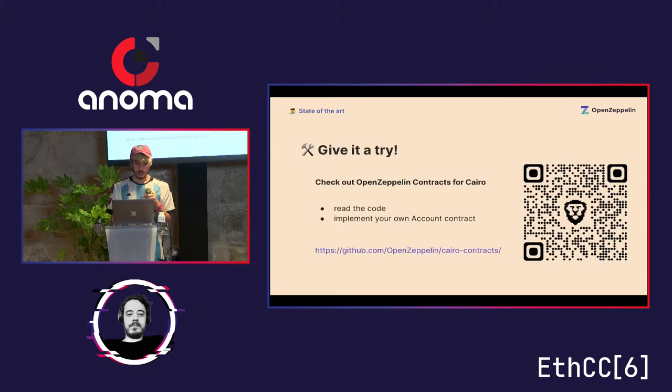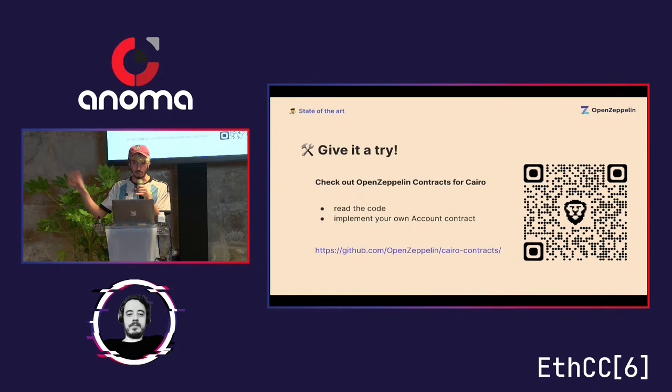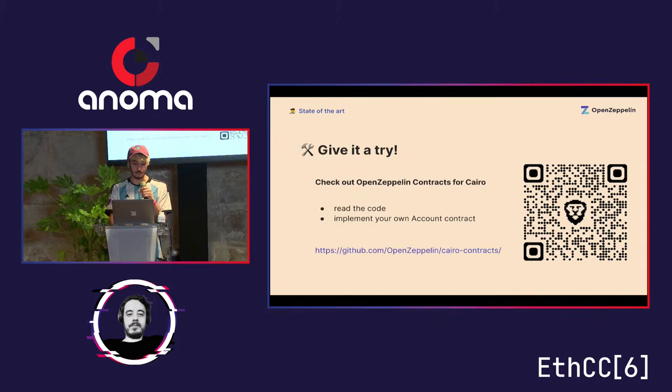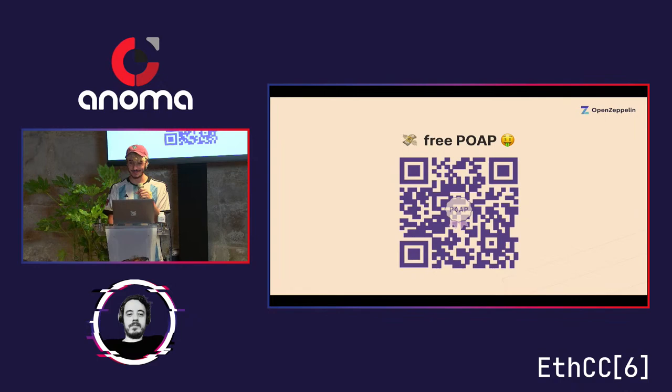That's pretty much it. You can give it a try using the link — scan the QR code. It's the repository with the Cairo Contracts library that has the account, ERC-20, ERC-721, and all other contracts you know from OpenZeppelin for Solidity. Implement your own account, tell me how it goes, and ask me any questions you have. If anyone has questions, we have a few minutes to answer those, so feel free.